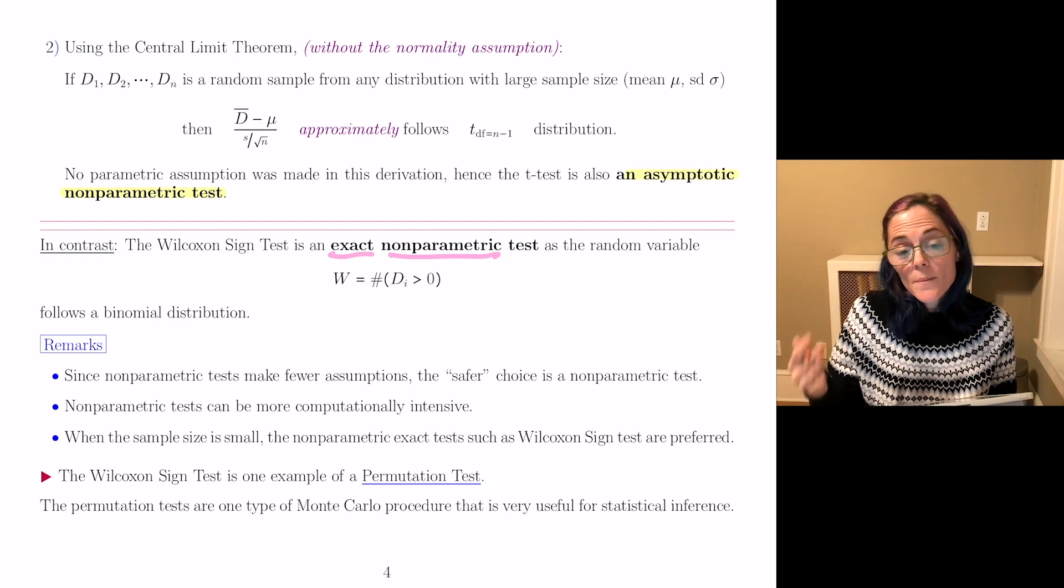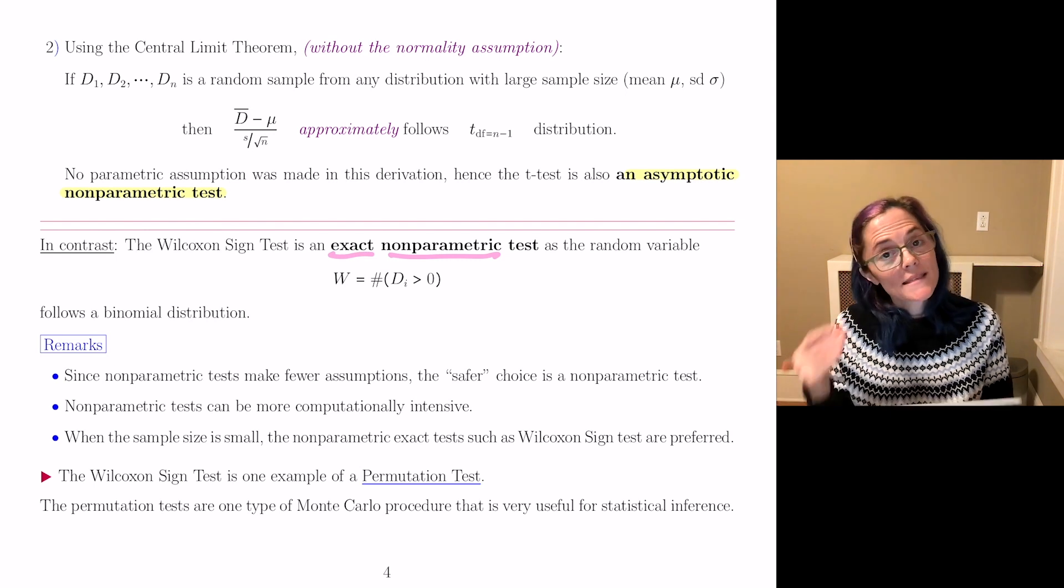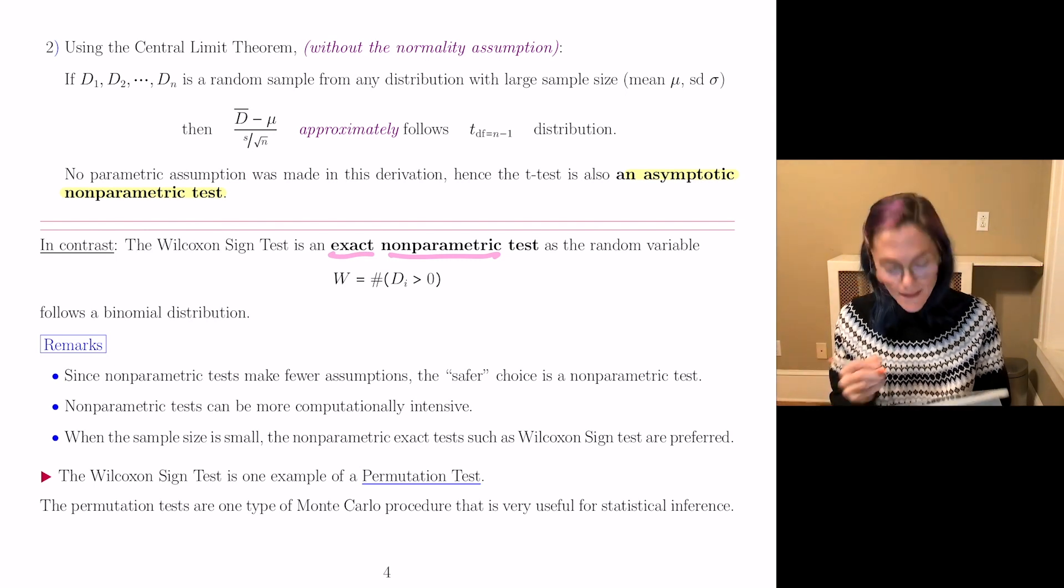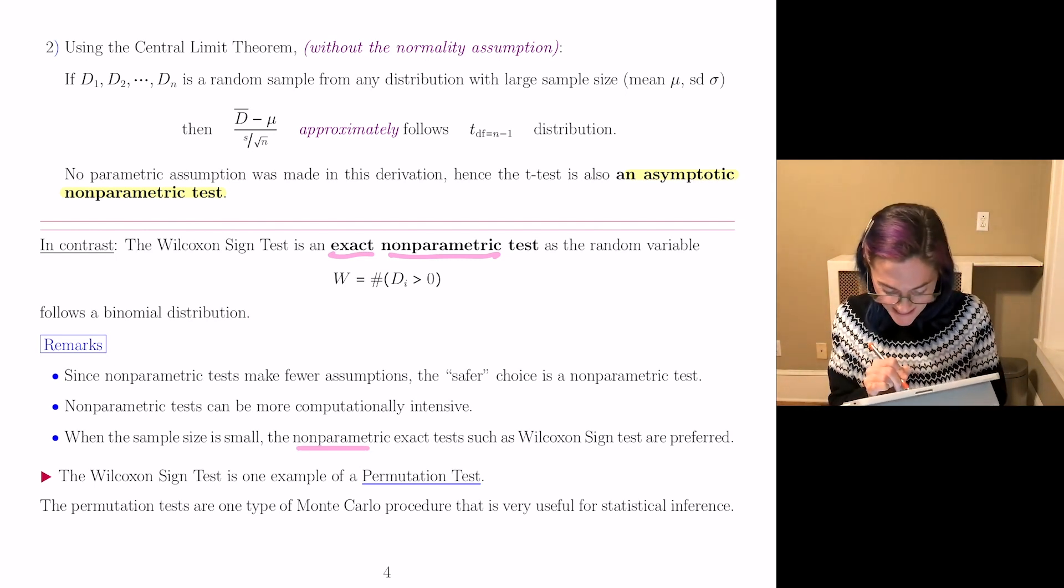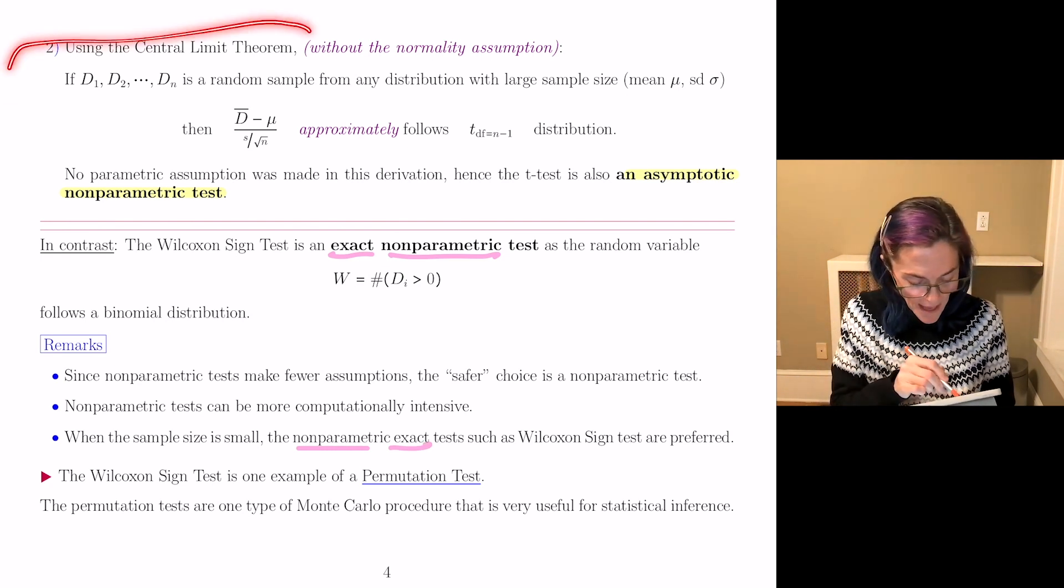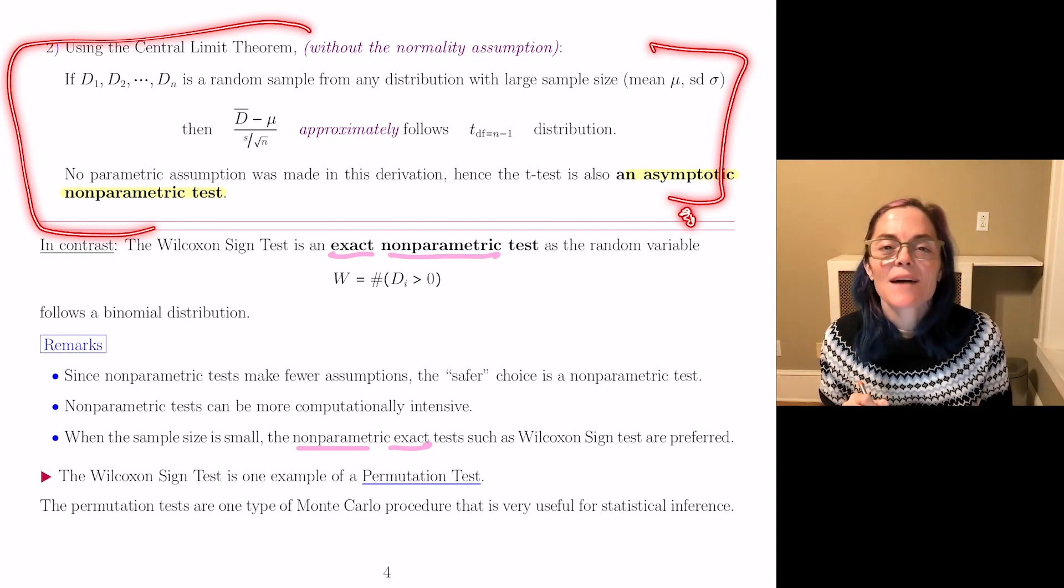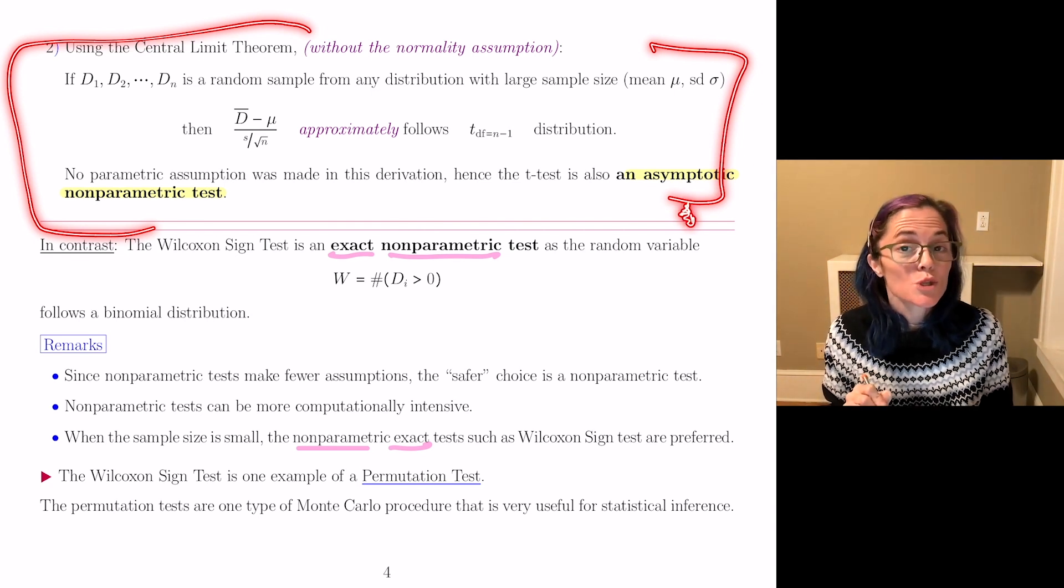When the sample size is small, the nonparametric exact tests are what's preferred. We would not be able to use an asymptotic nonparametric test if n is too small.